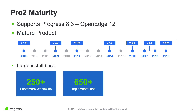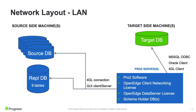This is a very mature product, supporting all Progress versions from 8.3 all the way up to version 12. We are now on version 6 of the product and have a large customer base — 250 customers have adopted Pro2 with about 650 implementations. We add nine tables to the source application, either inside an existing database or a separate REPL database with configuration and queuing tables.